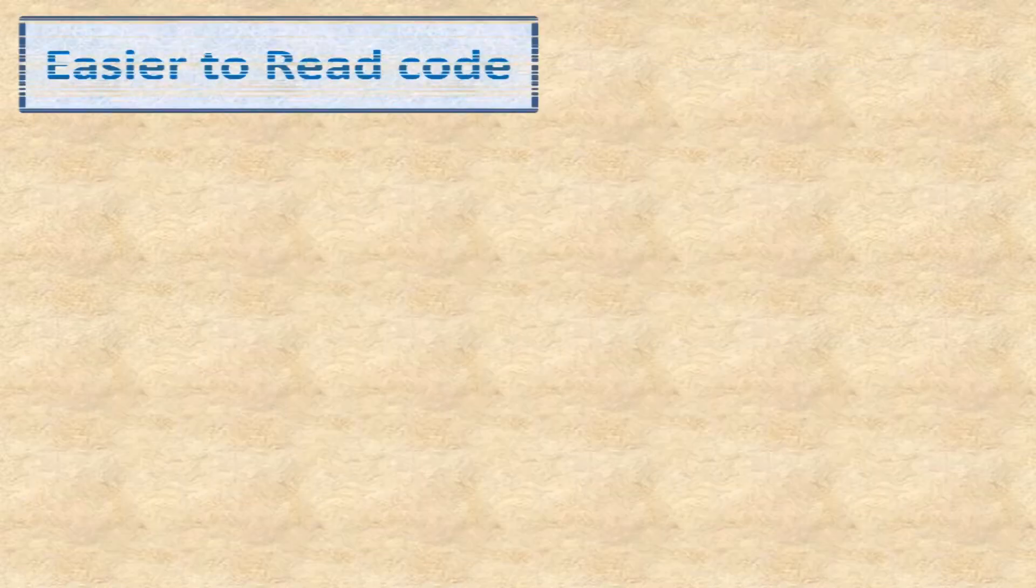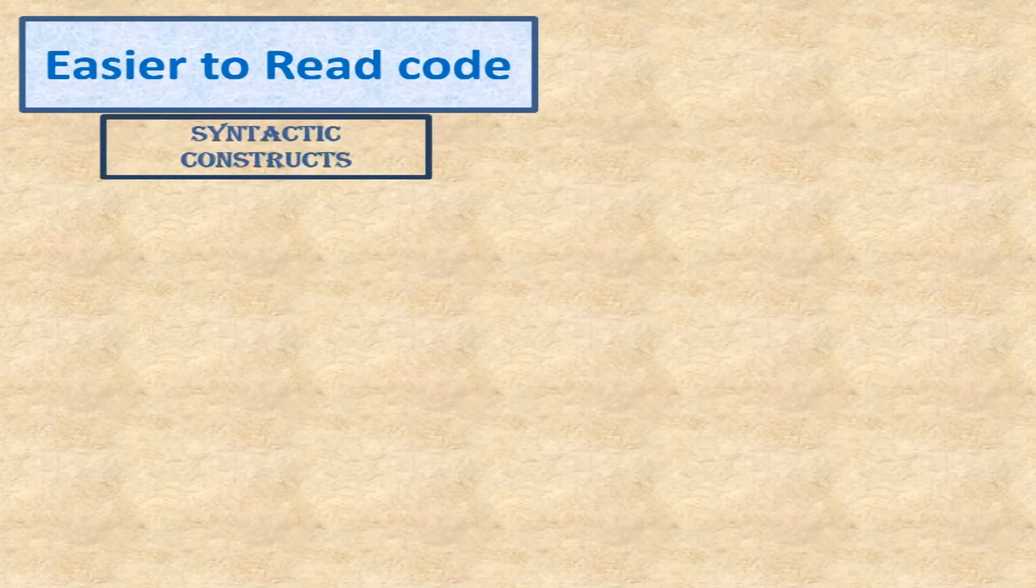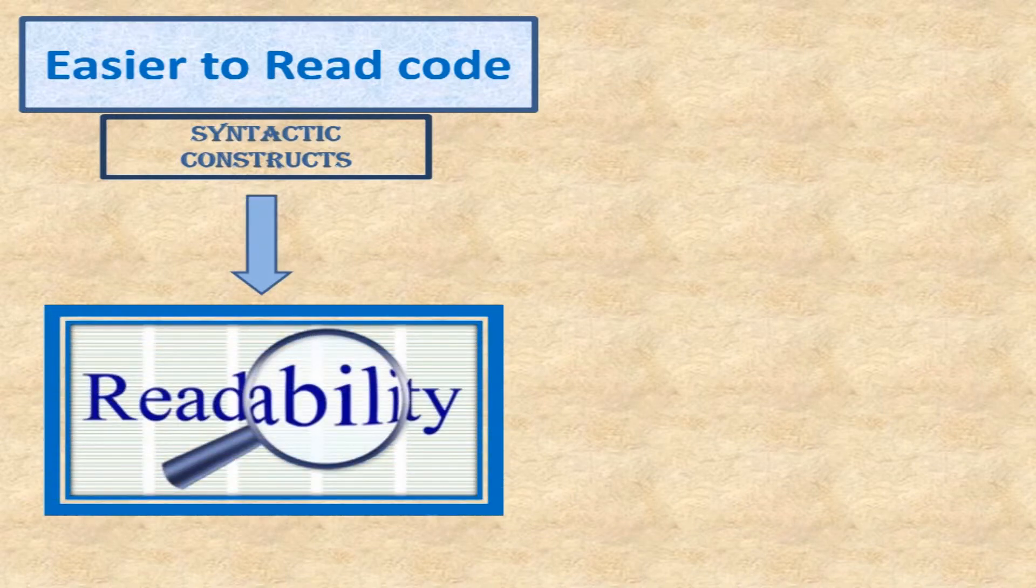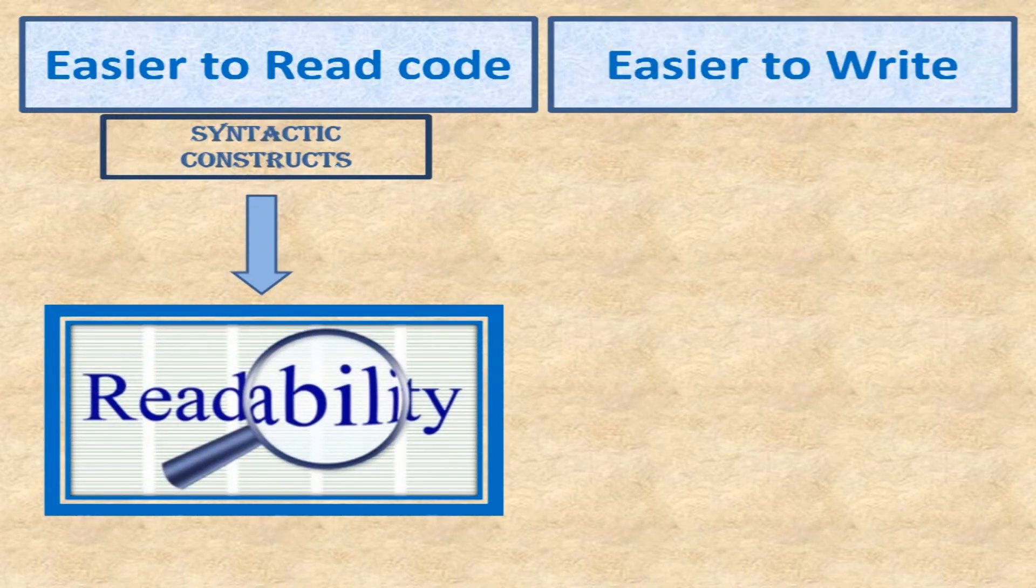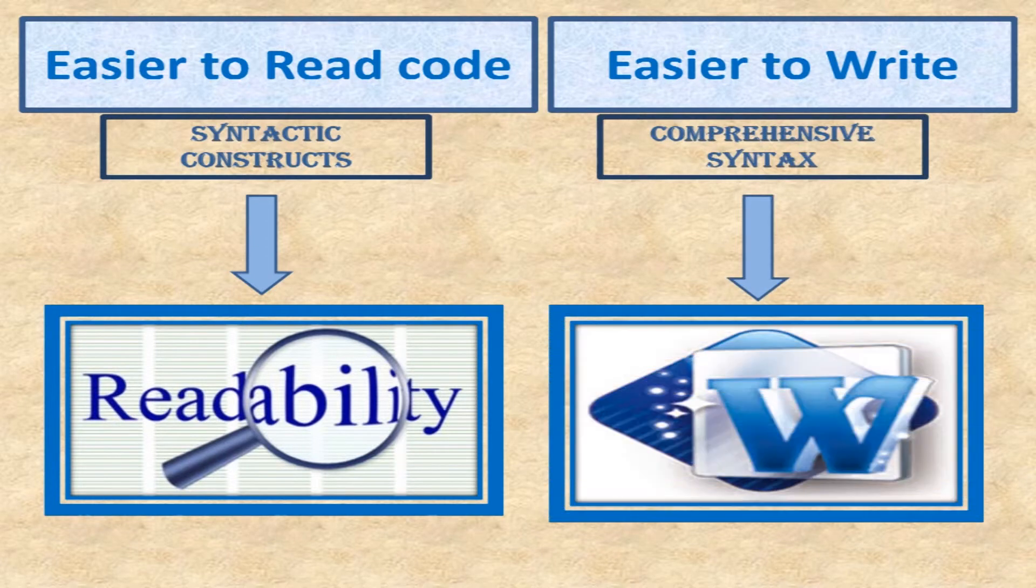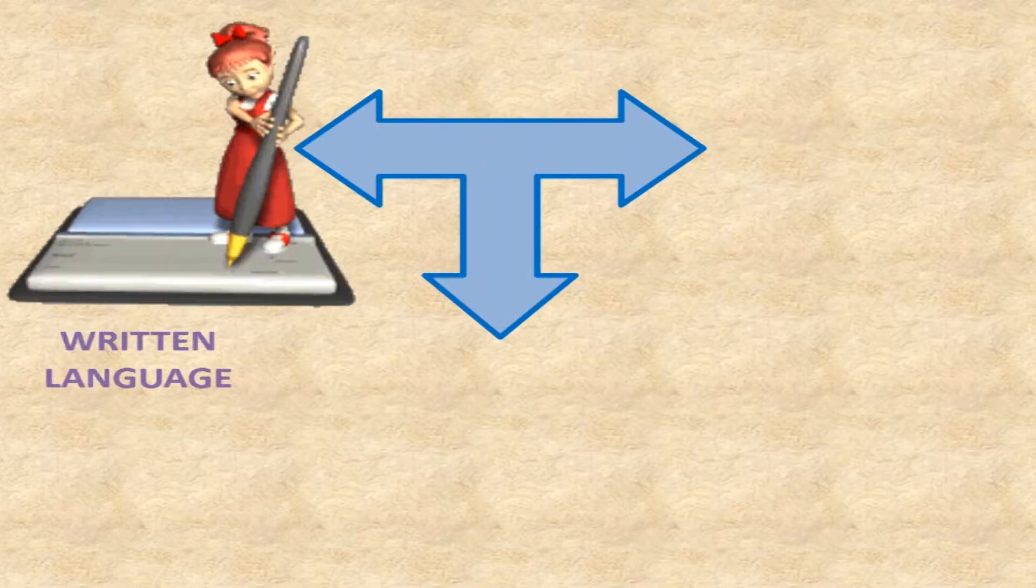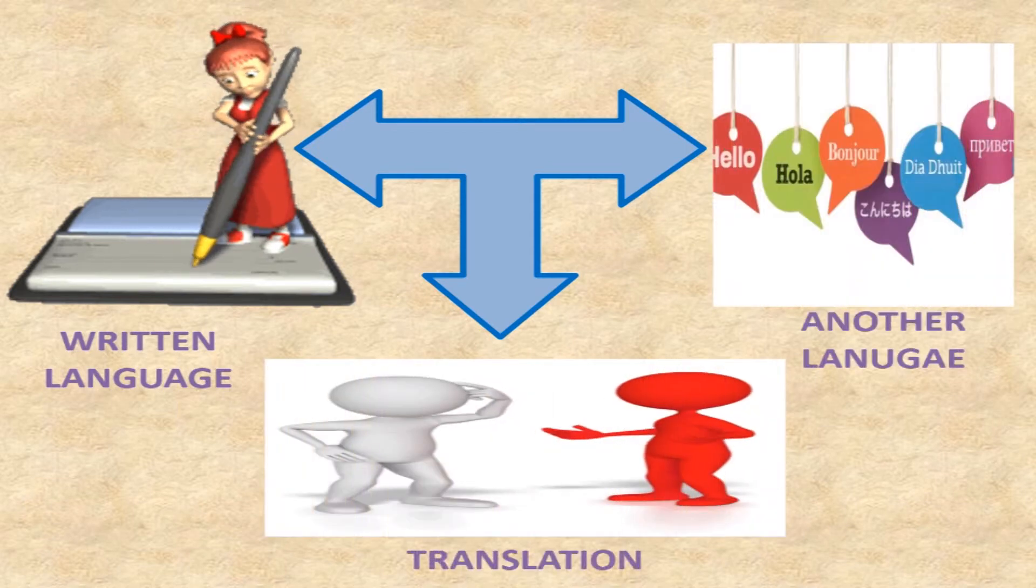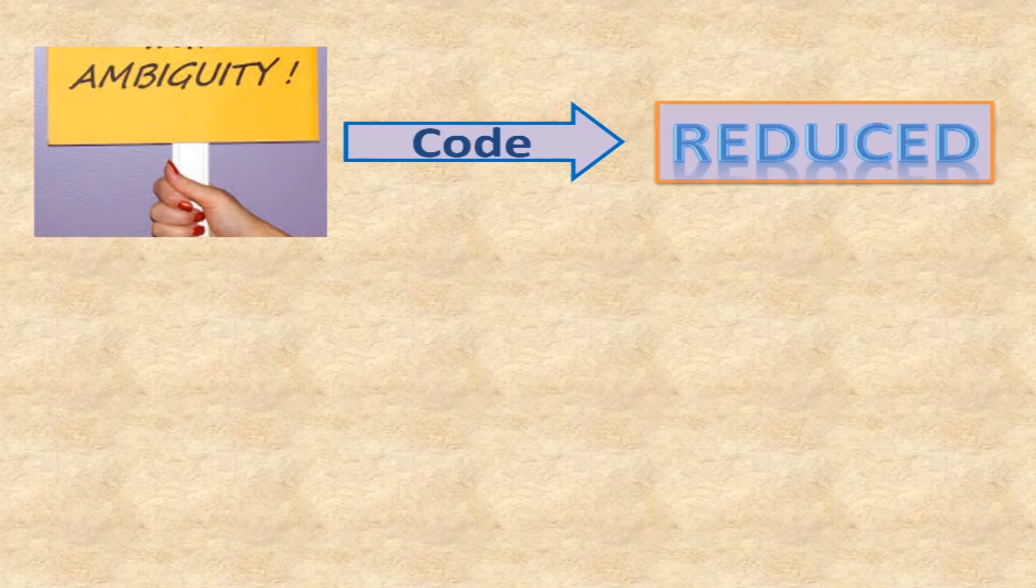It becomes easier to read the code when a variety of syntactic constructs are used, i.e. readability. It becomes easier to write as well and a comprehensive syntax can reduce the effort of writing the code, i.e. writeability. It becomes easier to translate the code written in a language to another language, i.e. translation. Ambiguity in the code is reduced.